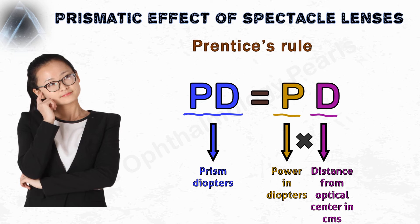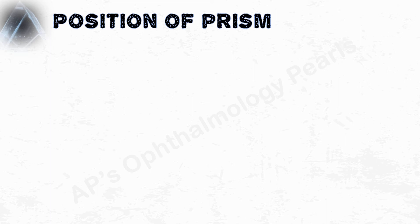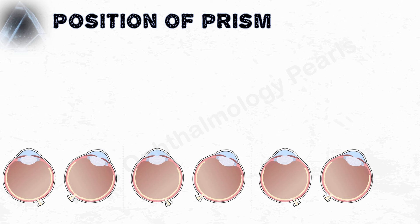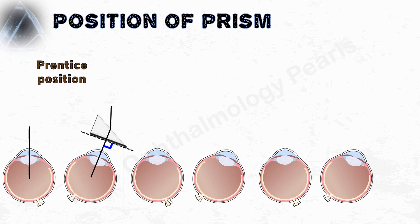Prisms are made of either glass or plastic. There are three ways in which a prism can be held. Glass prisms are calibrated to be held in the Prentice position, that is, perpendicular to the visual axis. Practically, this can be achieved by holding the prism parallel to the plane of the iris. Plastic or acrylic lenses are calibrated to be held in the minimum deviation position, that is, when the angle of incidence is equal to the angle of refraction.